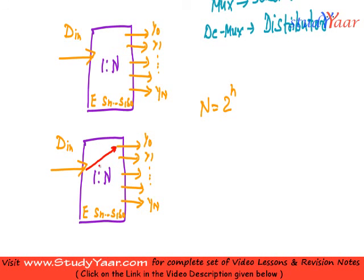It connects one of these, and this is your switch. Your input goes out to one of these outputs. Y0, Y1, Y2, Y3 till Y capital N.